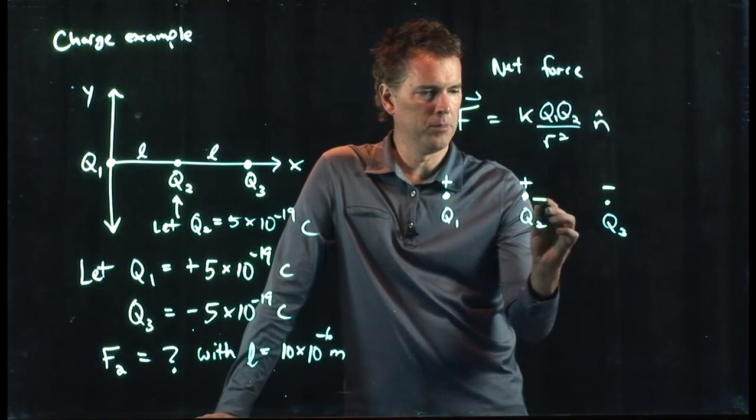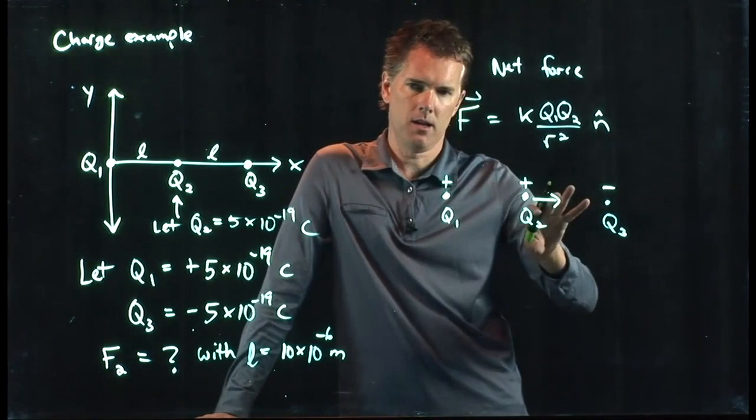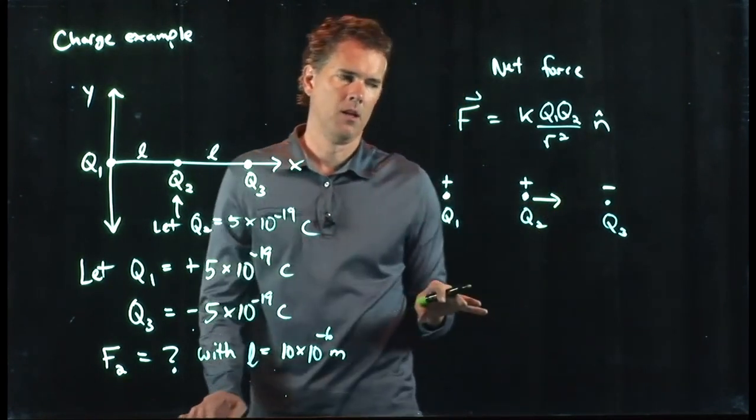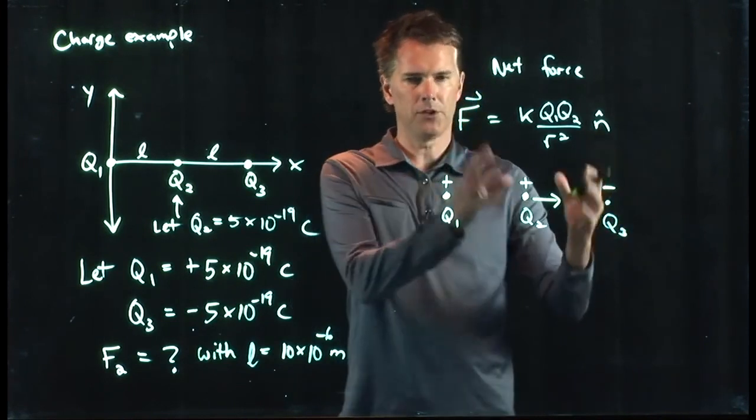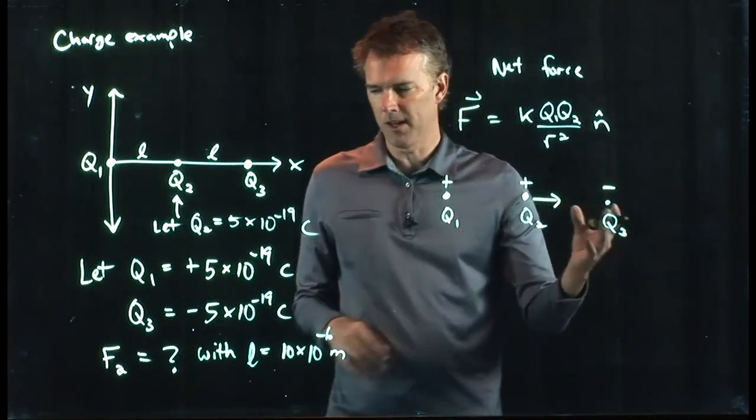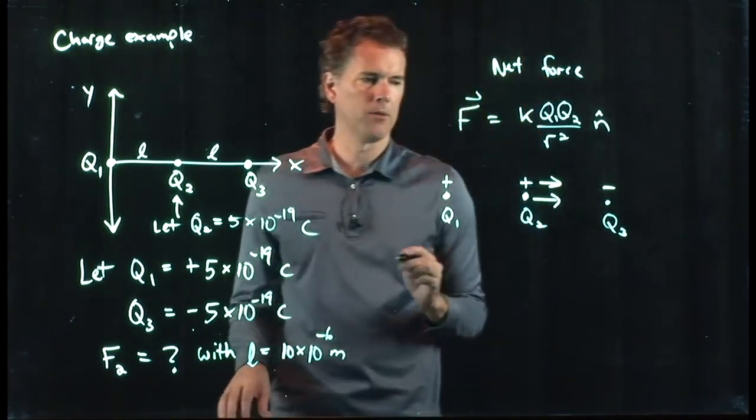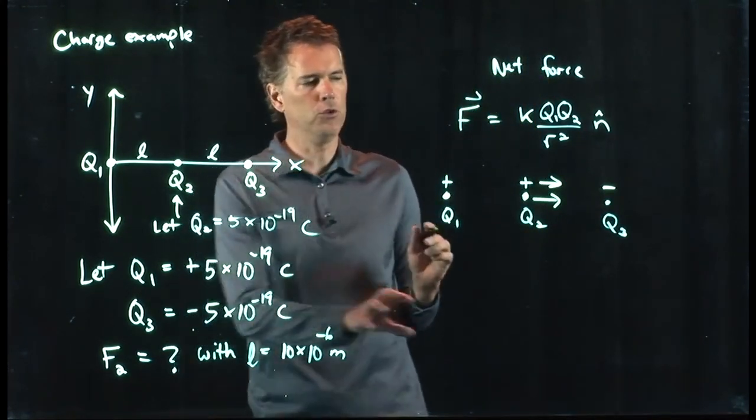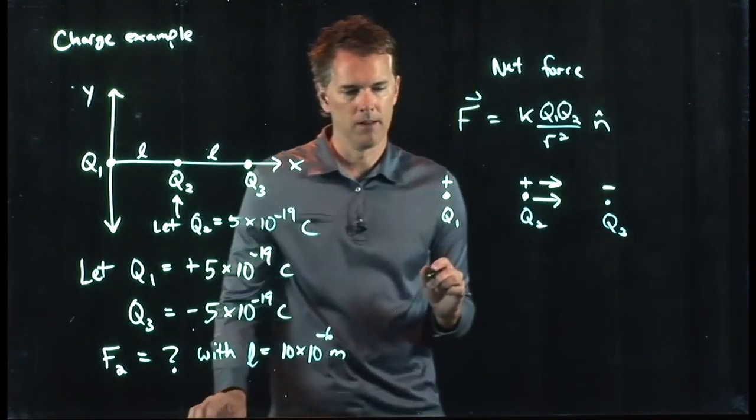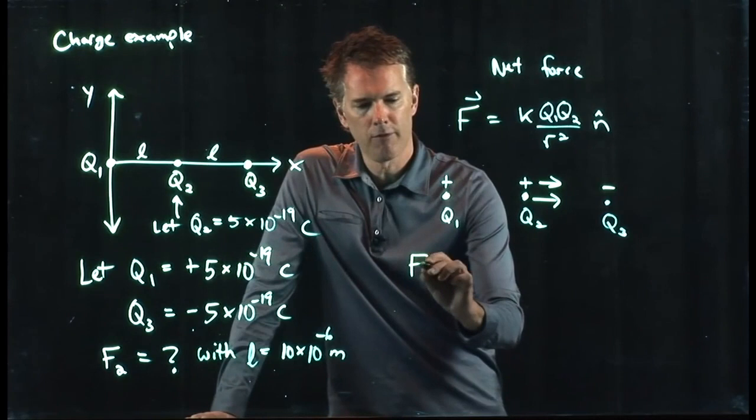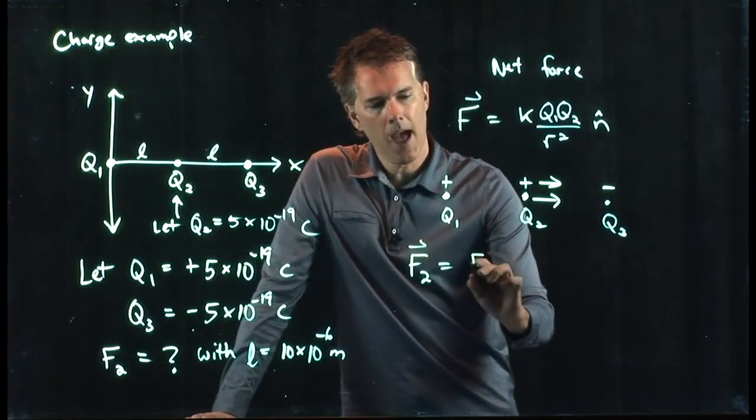Repulsive, because they are like charges. So q1 is trying to push away q2. But between q2 and q3, that's attractive because q3 we said was negative, and so there's another force in that direction as well. So there's two forces acting on q2, both of them are to the right. And so what is the net force on F2?